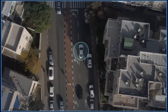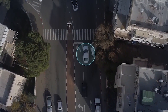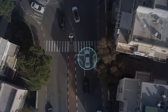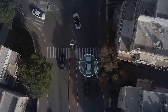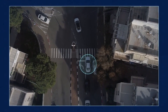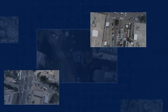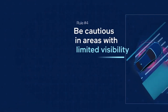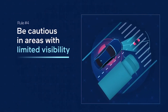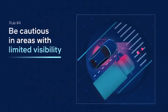In this example, we see how the AV exercises caution around occluded areas. Let's take a closer look at how RSS Rule Number 4 works: be cautious in areas with limited visibility.